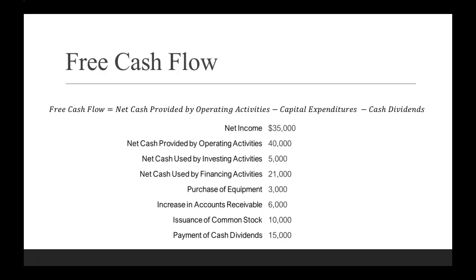So let's go piece by piece and see what we need in our calculation. Net income? No — net income helps you calculate your net cash provided by operating activities, which we are given on the next line. So that $40,000 — that number we're going to need. Net cash used by investing? Nope, we don't need that one. Net cash used by financing? No. Purchase of equipment — a purchase of equipment is a capital expenditure. Your capital expenditures are anytime you buy property, plant, or equipment. It's reinvesting back into the company.